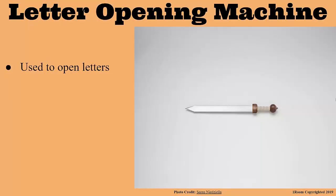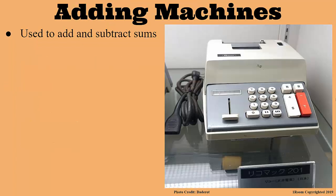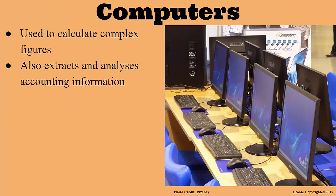The next list is for accounting machines. I'm sure calculators fall here. Yes, they do. They can be manual or scientific, and either way they are used to make calculations where large figures are involved. Correct. Ever heard of adding machines? Nope. Well, here is one. It is used for additions and subtractions — strictly additions and subtractions.